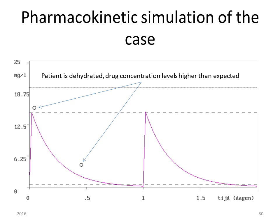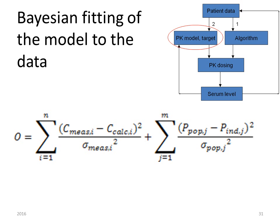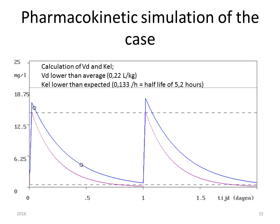In this slide you see the population graph together with the actually measured serum concentrations. Next, you perform a Bayesian calculation to determine the most probable individual pharmacokinetic parameters. The Bayesian calculations result in a volume of distribution slightly lower than average — 0.22 liters per kilogram body weight — and an elimination rate lower than expected, resulting in a half-life of 5.2 hours.